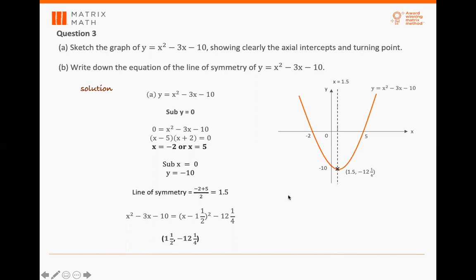After that, let's look at part B. They ask you to write down the equations of line of symmetry. So you write down and calculate what is the line of symmetry. Therefore, line of symmetry will be x equals 1.5.